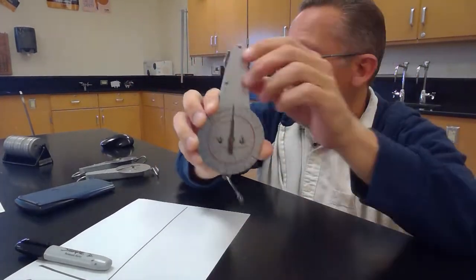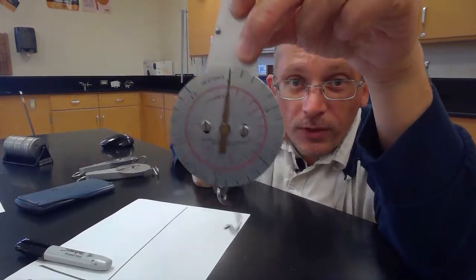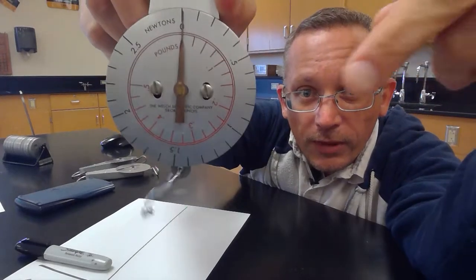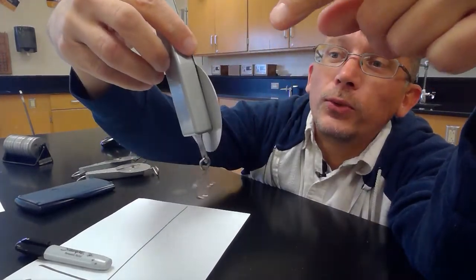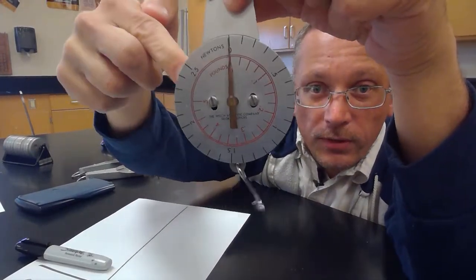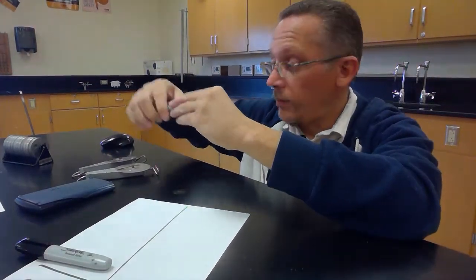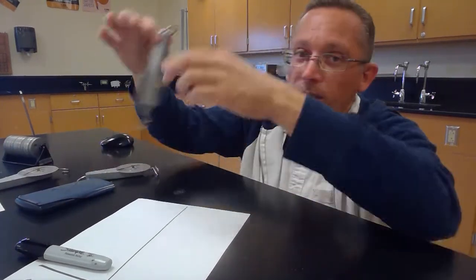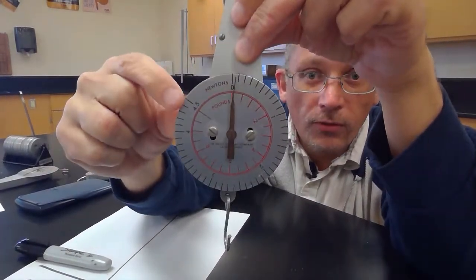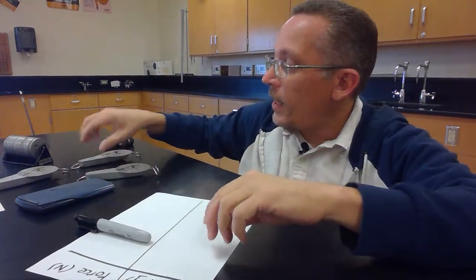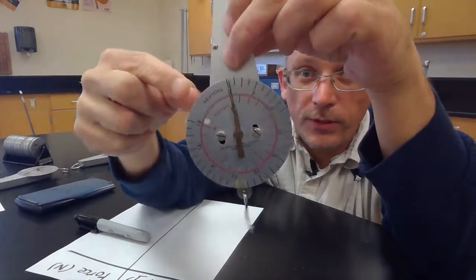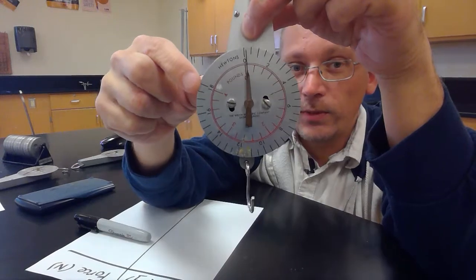Now I've got three different spring scales, they all look kind of the same. This one will measure as much as two and a half newtons, but some of the things I want to measure might have a mass of more than two and a half newtons. So I have one that goes up to four and a half newtons, and I also have one that goes up to 18 newtons.